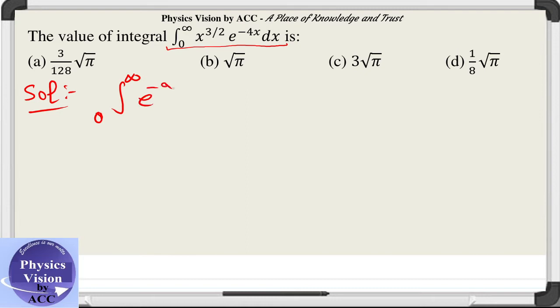So gamma function is e raised to the power minus ax into x raised to the power n minus 1 dx is equal to gamma n divided by this constant power n. This is our gamma function.